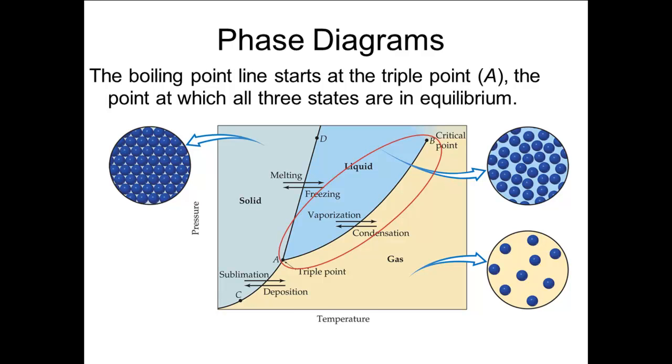The point A is called the triple point. It is the temperature and pressure at which all three phases can exist together in equilibrium.